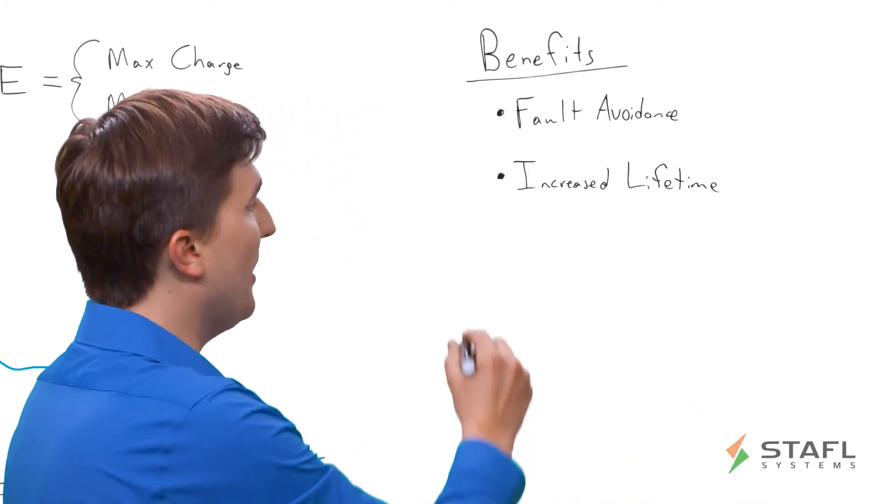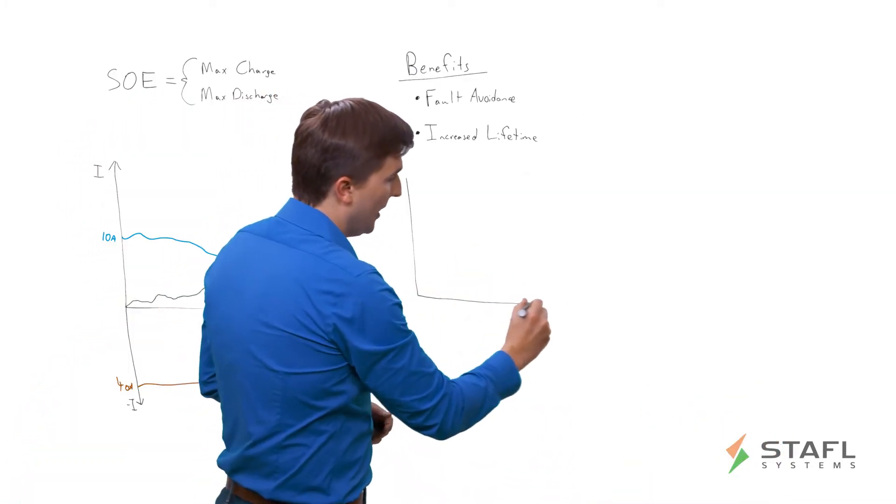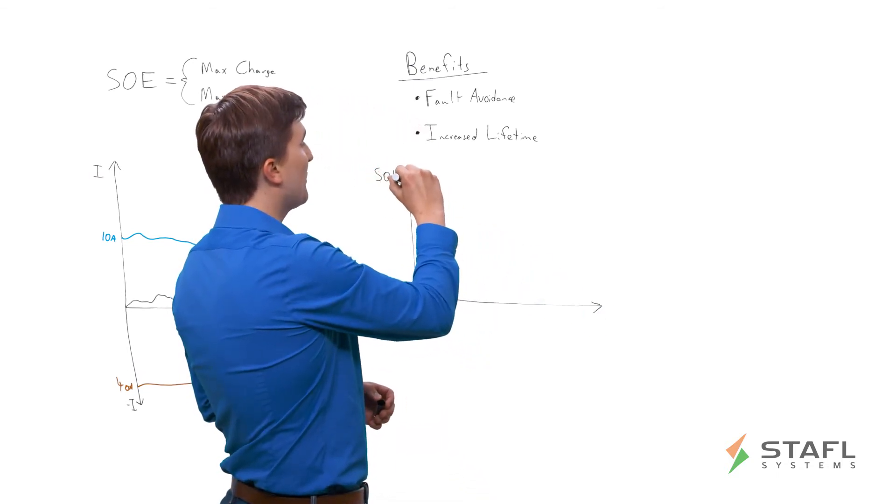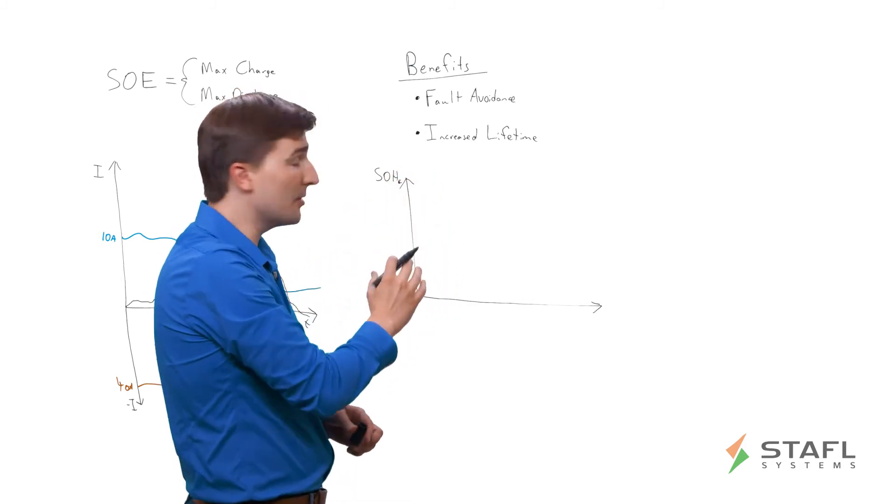It actually also calculates what is the expected degradation that is going to occur from a given charge or discharge for a period of time in a given state of the battery and keeps it to a limit so that you can expect to see you have an expected lifetime of the battery. And what do I mean by lifetime? Well, in the previous video, we discussed the state of health, specifically the state of health capacity or state of health C.